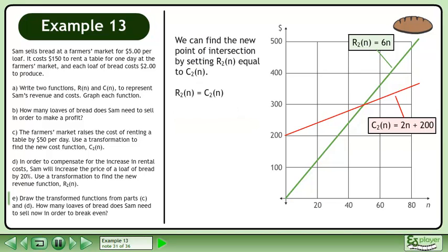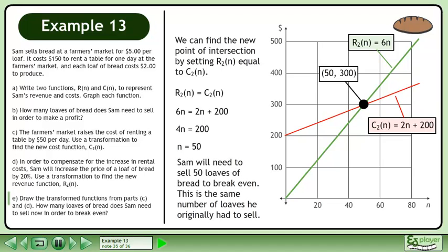We can find the new point of intersection by setting R2 equal to C2. The transformed revenue function is 6n and the transformed cost function is 2n plus 200. Subtract 2n from both sides to get 4n equals 200. Divide both sides of the equation by 4 to get n equals 50. Sam will need to sell 50 loaves of bread to break even. This is the same number of loaves he originally had to sell.